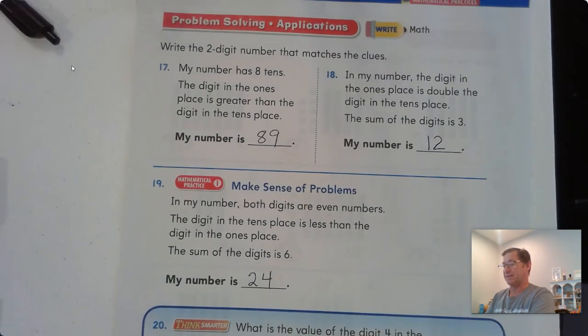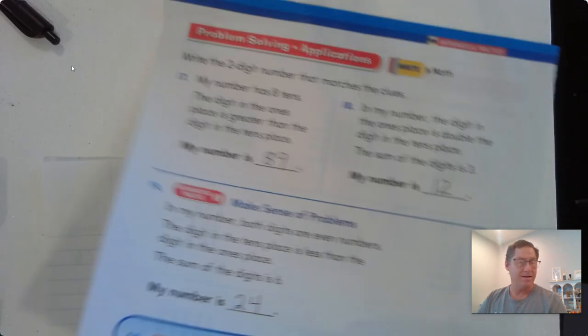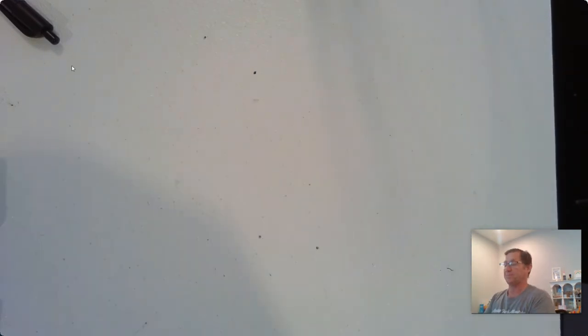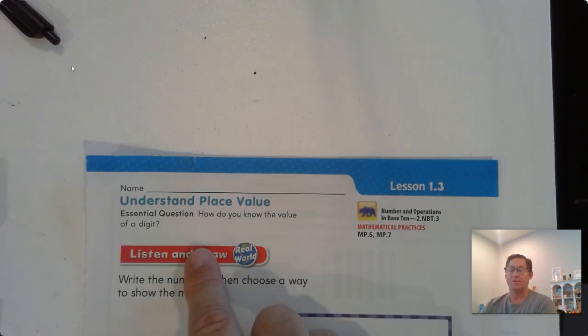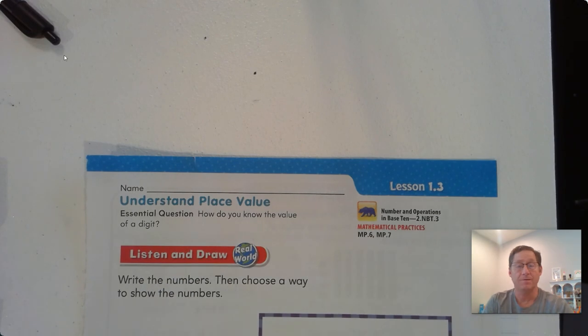So that's it for our beginning place value with tens and ones. Let's go back and look at our essential question. How do you know the value of a digit? We know the value of a digit based on its place. So if I have 38, I have 3 tens and 8 ones. The value of the 3 in 38 is 30 because there are 3 tens. The 8 in 38 would be 8 because there's 8 ones. That's it for lesson 1.3. Until next time, I will see you soon.